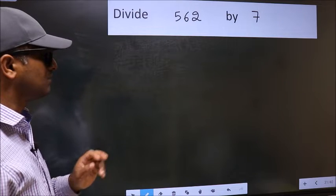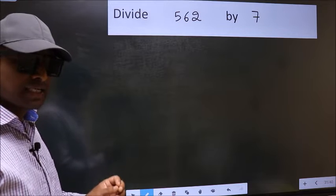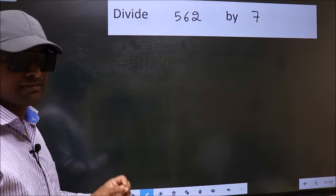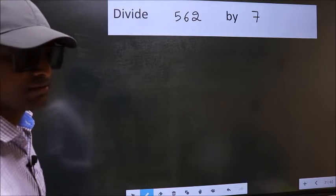Divide 562 by 7. While doing this division, many do this mistake. What is the mistake that they do? I will let you know. But before that, we should frame it in this way.